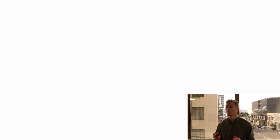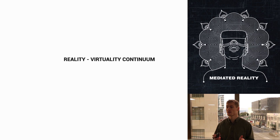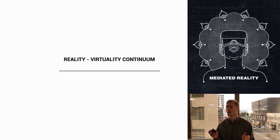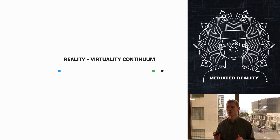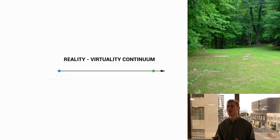To understand Mediated Reality, we must first begin with Milgram and Kishino's Reality-Virtuality Continuum. The Reality-Virtuality Continuum can be understood as a continuous scale ranging from the completely real on the left to the completely virtual on the right. The completely real is what we all know and understand as reality. In Mediated Reality, we call reality the real environment.